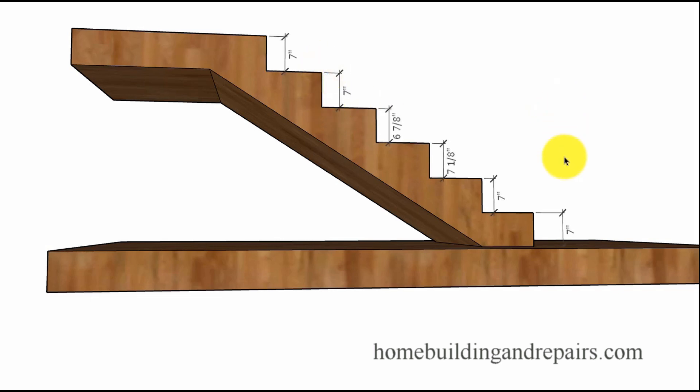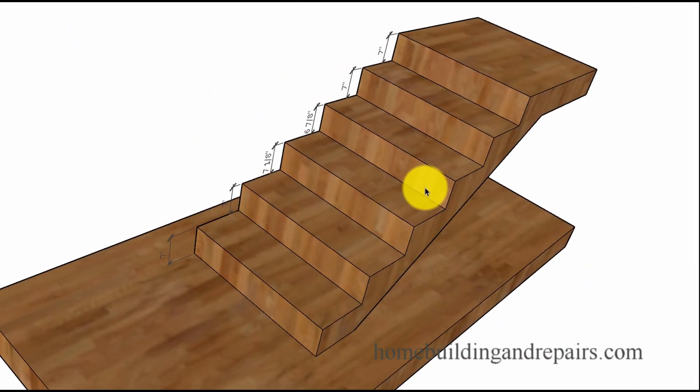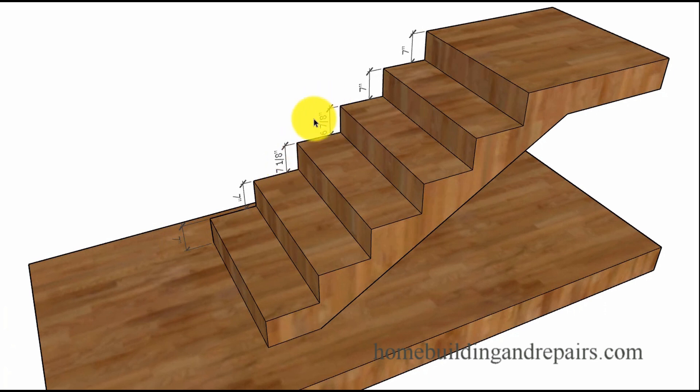In our first example we have six risers. Four of them are seven inches, one is six and seven-eighths, and the other is seven and an eighth. The smallest riser is six and seven-eighths, the tallest one seven and an eighth. The difference is a quarter of an inch. A situation like this would be acceptable because the difference between the smallest and the tallest is only a quarter of an inch.